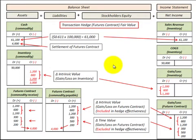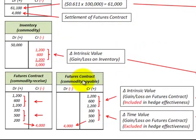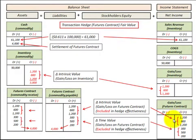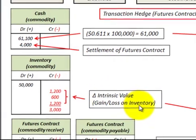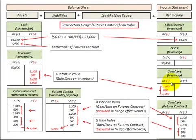To record this hedging transaction: for the futures contract as a payable or receivable, any change in intrinsic value and any change in time value for the gain or loss on a futures contract are both included, and recognized as a gain or loss as part of net income — in this case all gains. For the inventory account, that includes only the change in intrinsic value for any gain or loss on the inventory, also recognized as a gain or loss in net income — in this case a loss.